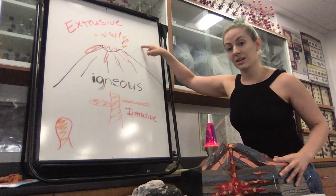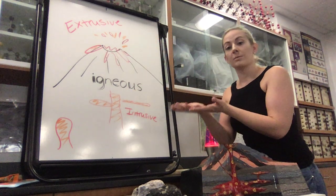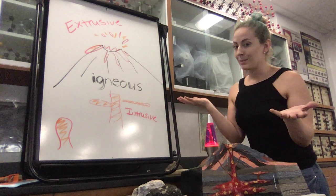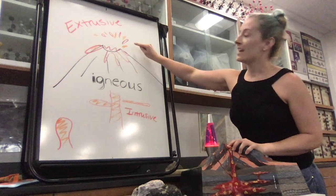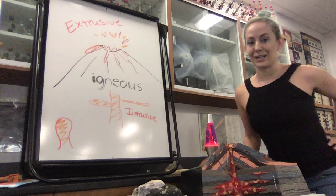Once that magma leaves the earth's surface, it is termed lava. It's the same material, just different location. And the lava, when it cools, forms an extrusive igneous rock.